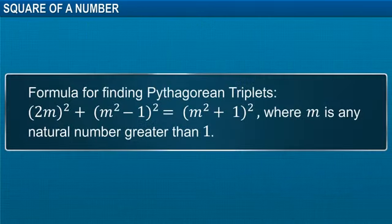More Pythagorean triplets can be found using a formula shown here. 2m whole square plus m square minus 1 whole square is equal to m square plus 1 whole square. Remember, here m is any natural number greater than 1.